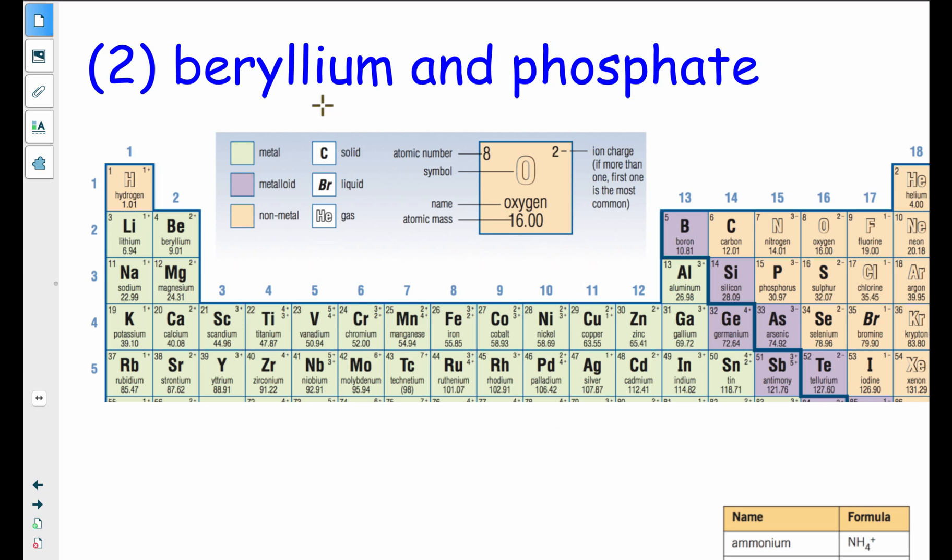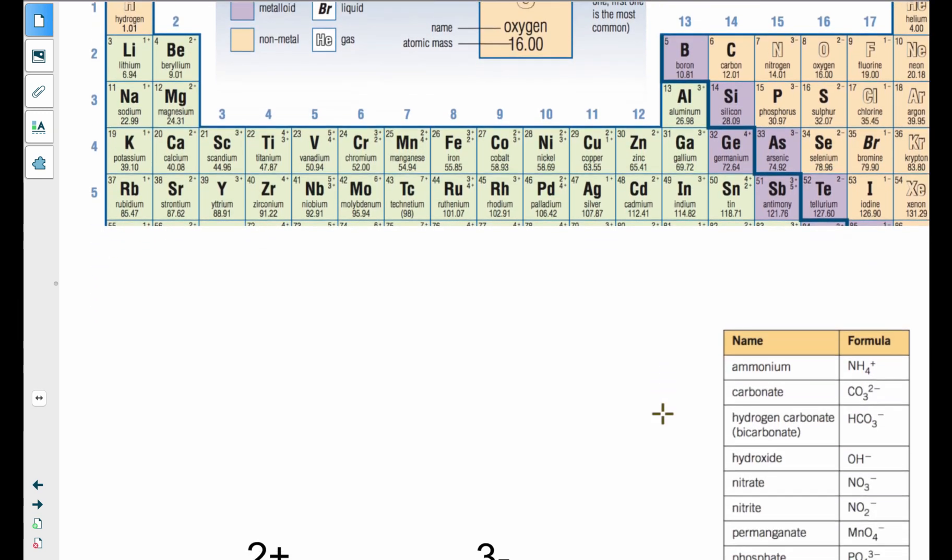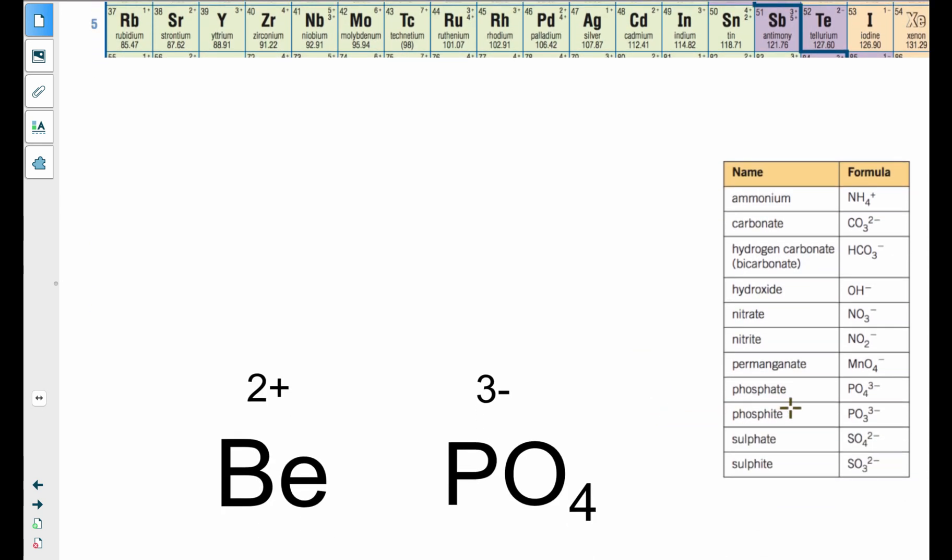Let's do a compound between beryllium and phosphate. Beryllium on the periodic table, it's BE, it's a 2 plus. Phosphate is not on the periodic table. We need to go look at our chart of common polyatomic ions. So phosphate is right here, and it's a PO4 with a 3 minus.